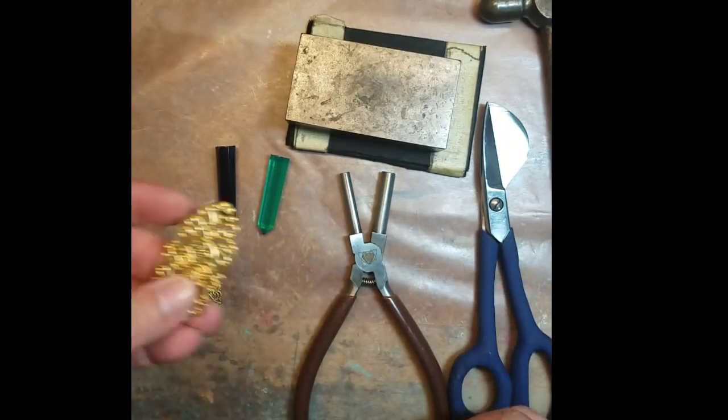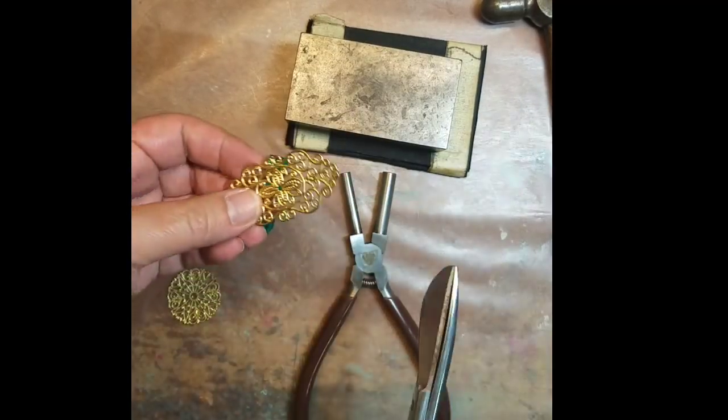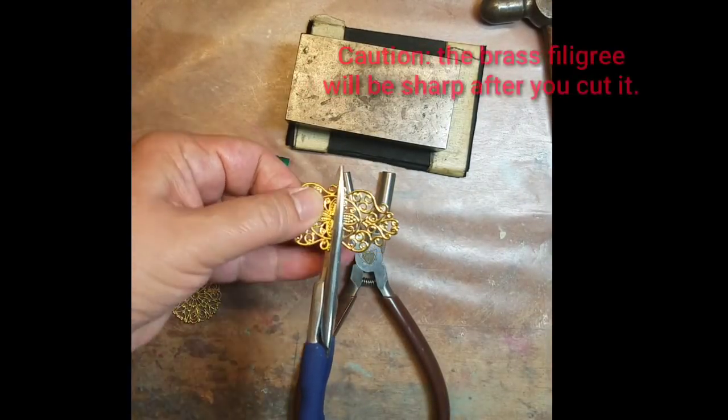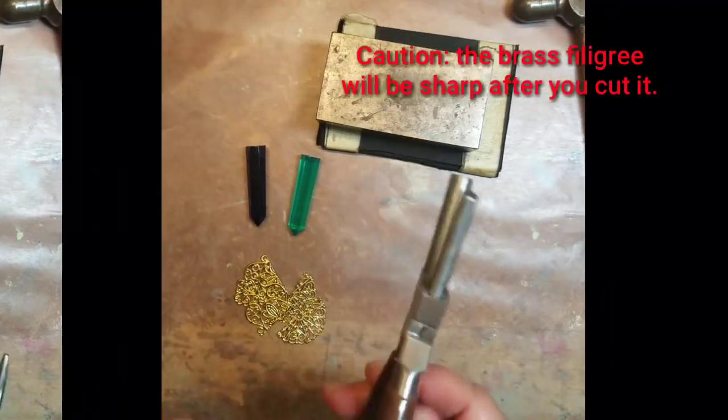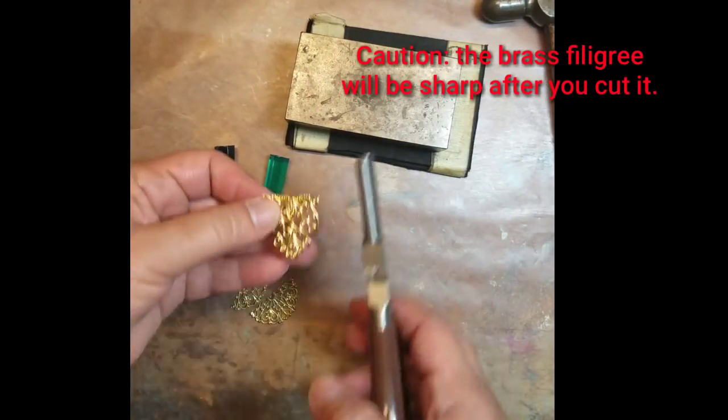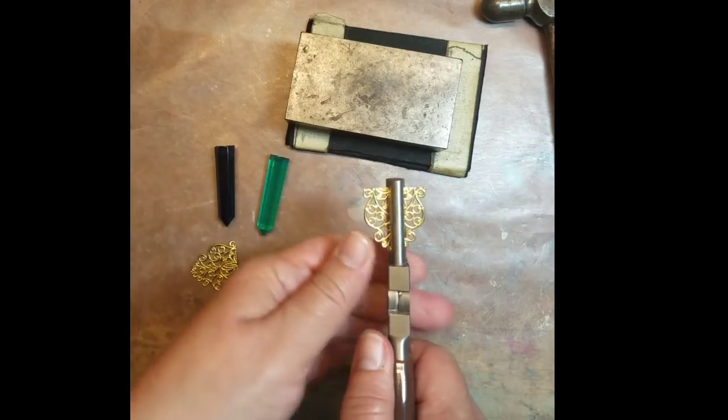Next grab some brass filigree, cut it if necessary and you're going to use some round pliers to shape the filigree. Hammer it if necessary around the edges to get the round shape.